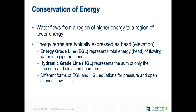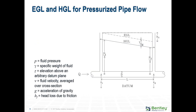When we talk about energy, we very often use these two terms: energy grade line or hydraulic grade line. The energy grade line is the sum of the pressure column. If we're talking about a pressurized pipe flow, at a particular point we say the energy grade line equals the pressure head plus the elevation and the velocity head, which is v squared divided by 2g.